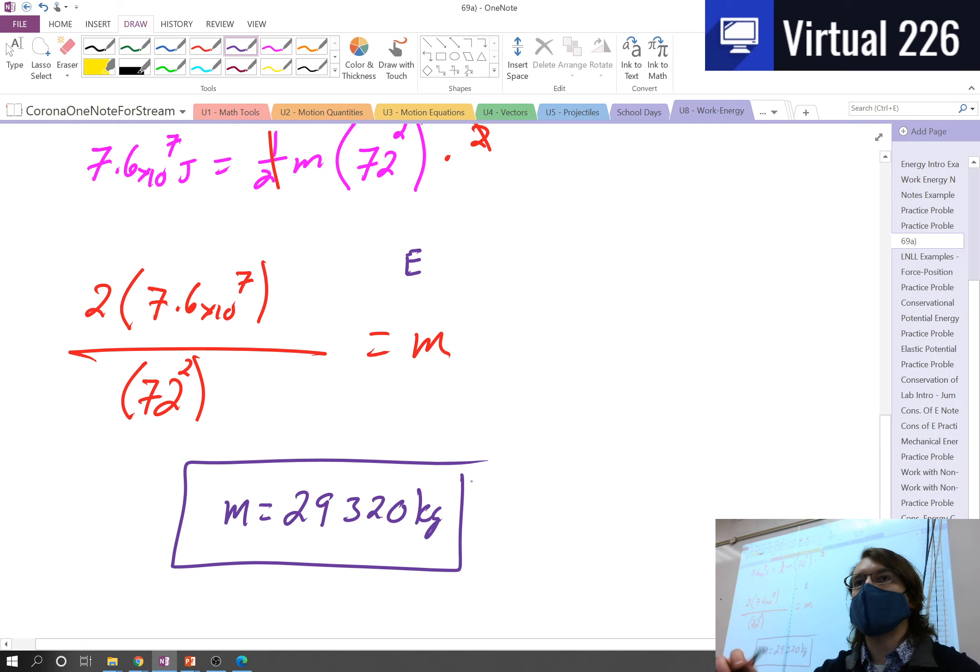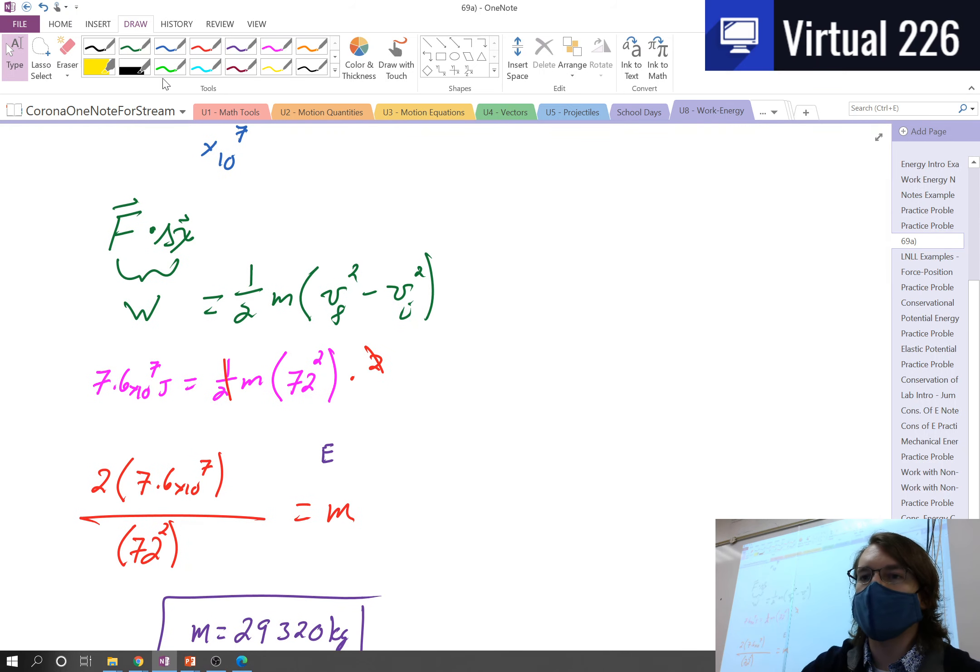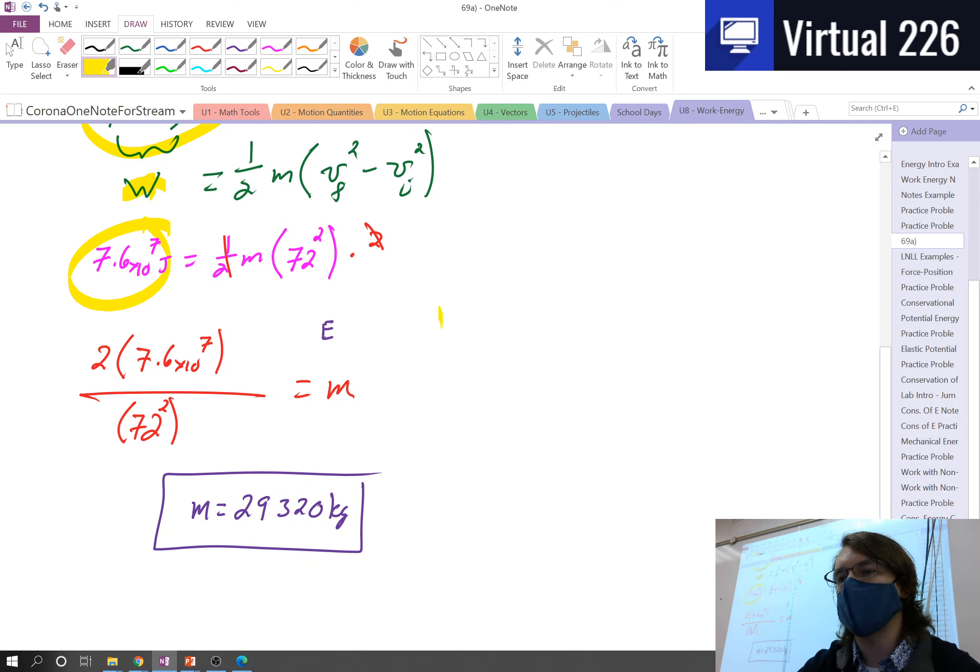But with that, that problem was another work energy problem. It's important for us to remember that our traditional F dot X is just work. And because we had that work in this problem, this problem was very straightforward for us to solve. And with that, this problem is finished. Until next time, adios and take it easy.